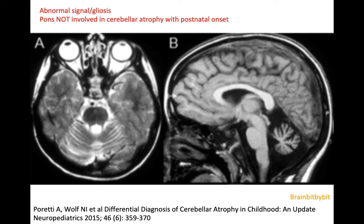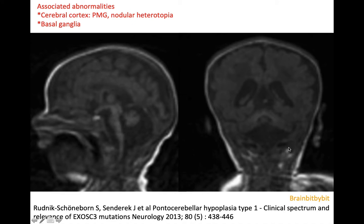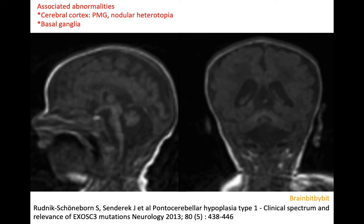The PANS is not involved when there is atrophy of the cerebellum that has started postnatally. If there is hypoplasia of the cerebellum and PANS, you can look at the supratentorial compartment, because patients with pantocerebellar hypoplasia often have associated abnormalities, mainly in the posterior part of the brain, such as polymicrogyria or periventricular heterotopia, and also abnormal basal ganglia.